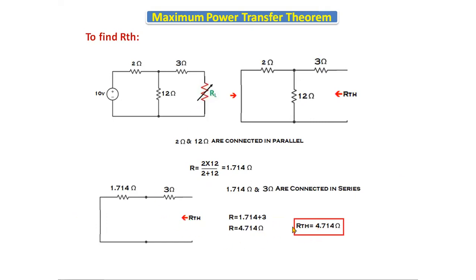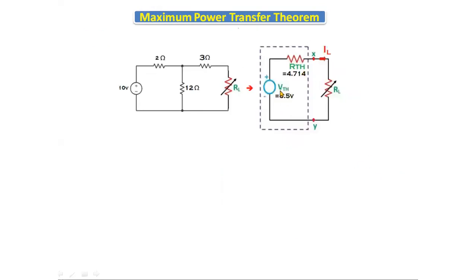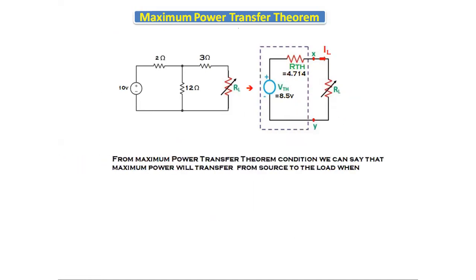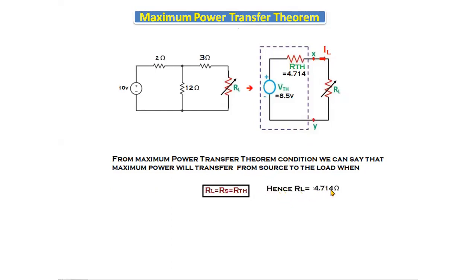So we have found Vth equals 8.5 volts and Rth equals 4.714 ohms. Substituting these into the Maximum Power Transfer Theorem equivalent circuit, from the theorem's condition, the maximum power transfers when RL equals Rth. Therefore, RL equals 4.714 ohms, which is the source resistance.